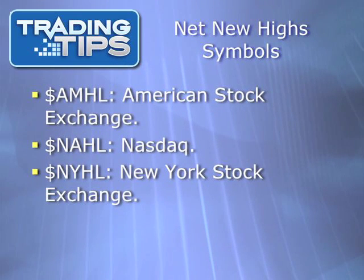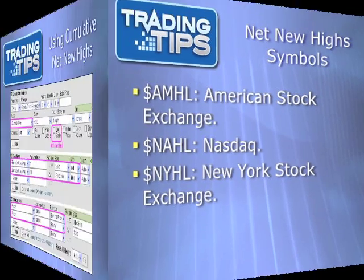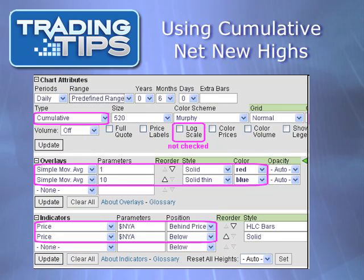Here is a list of ticker symbols for the net new highs of the three major U.S. indices. For instructions on getting the cumulative net new highs line and its moving average: go to StockCharts.com and enter the index's net new highs ticker. Select cumulative for plot style, and make sure log scale is not selected. Then choose price as an indicator and enter $NYA for the New York Stock Exchange, $IXIC for the NASDAQ, or $XAX for the American Stock Exchange.